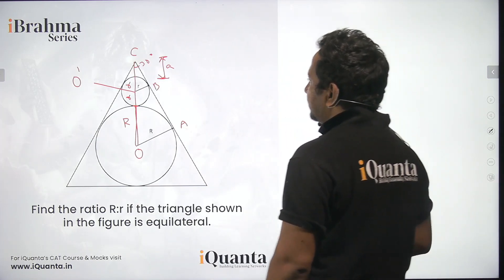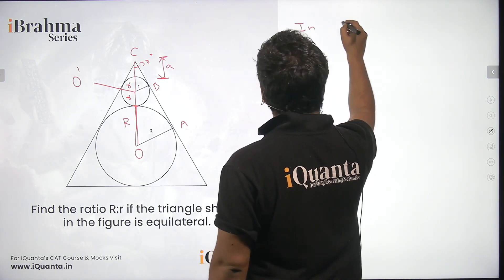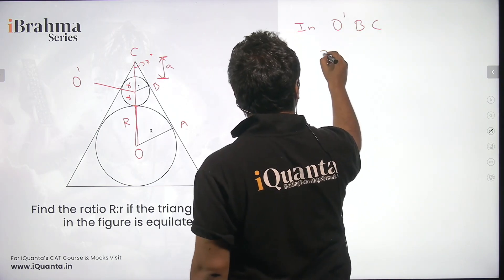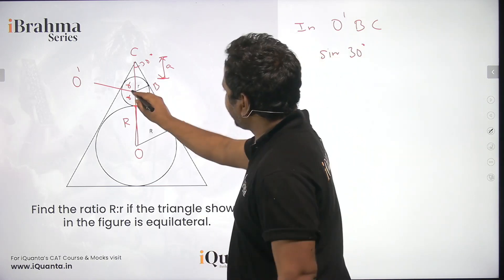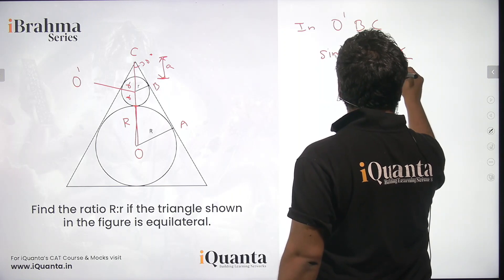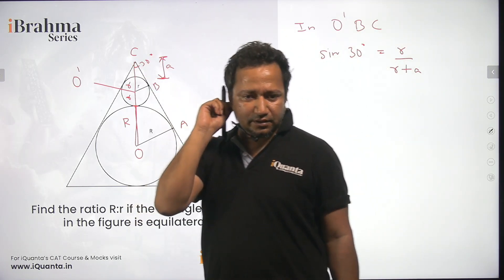So now in the right angle triangle O dash B C, the smaller one, the value of sine 30 will be perpendicular upon hypotenuse, that means it will be small r upon small r plus small a as I have considered this to be small a.